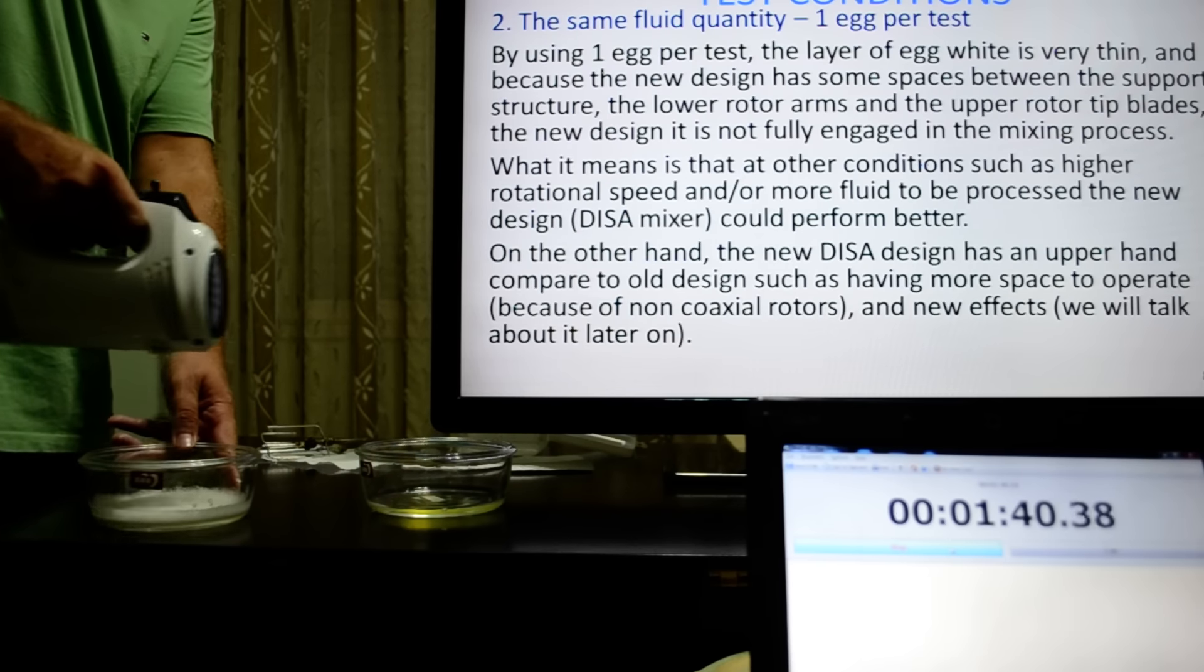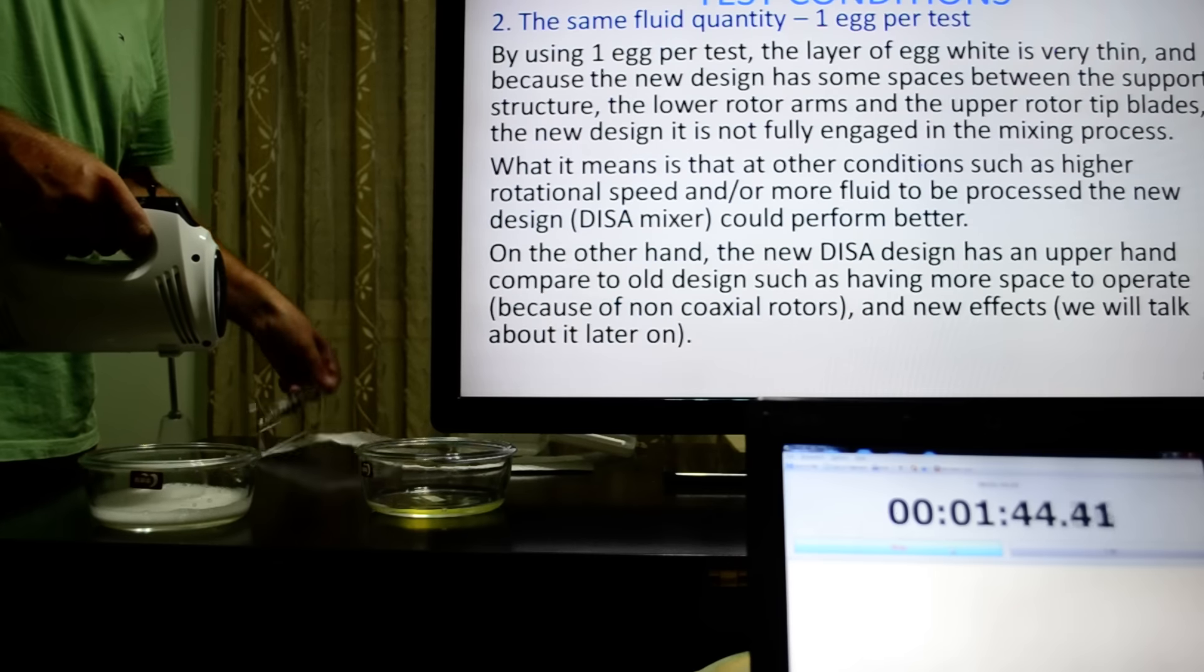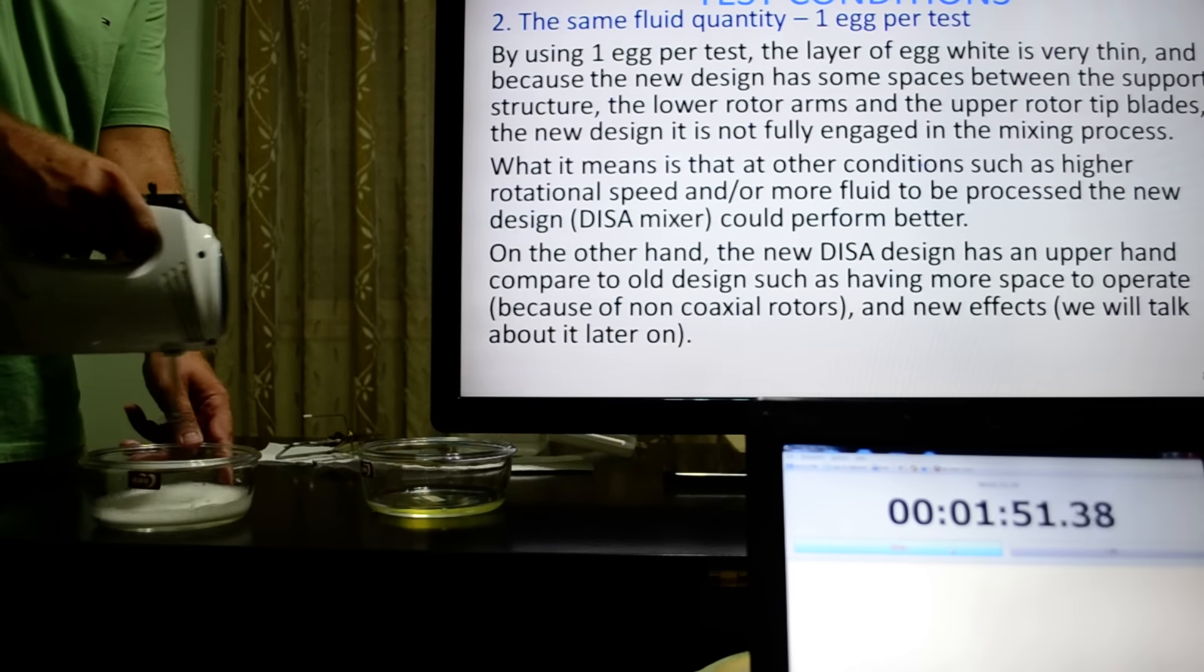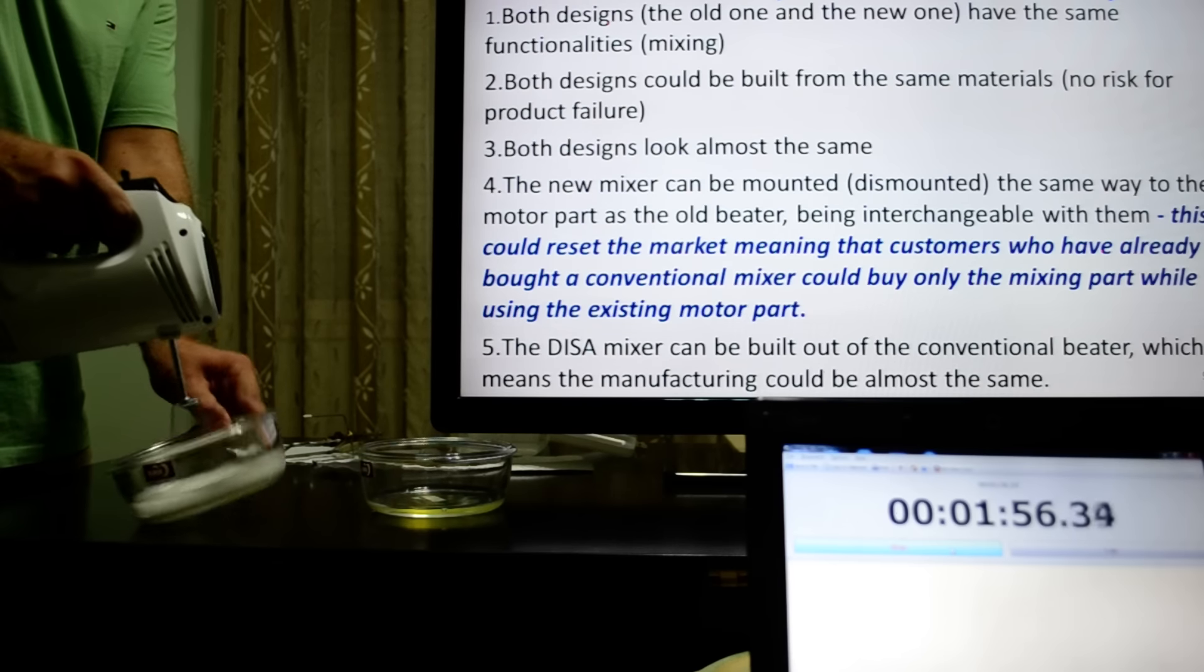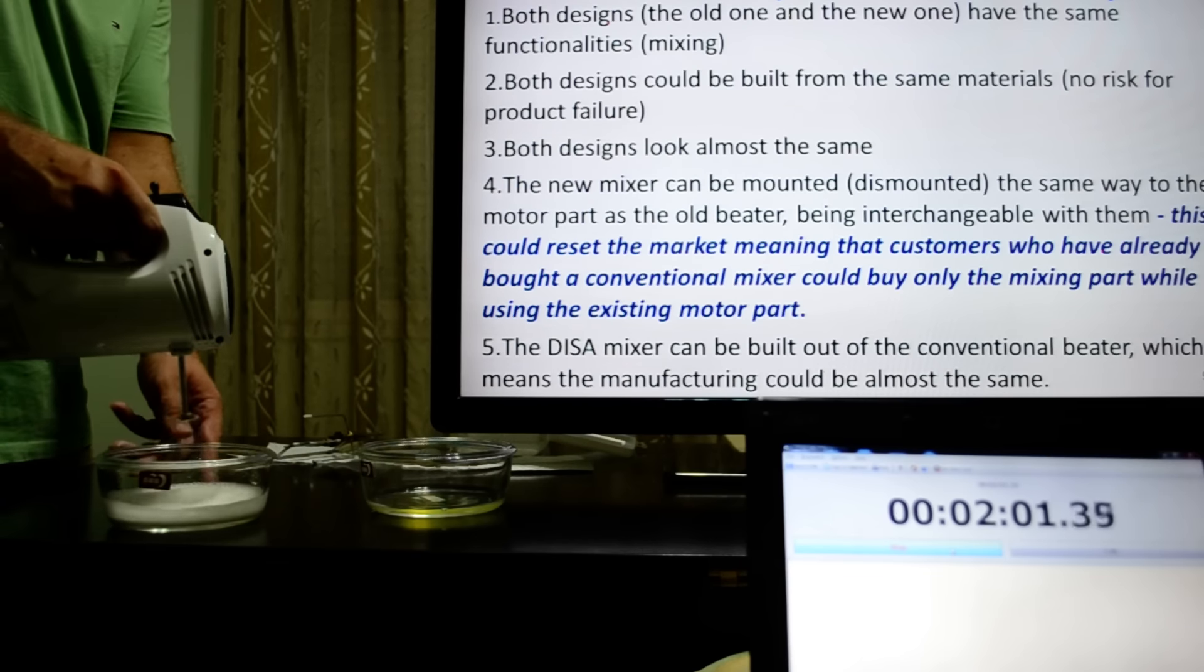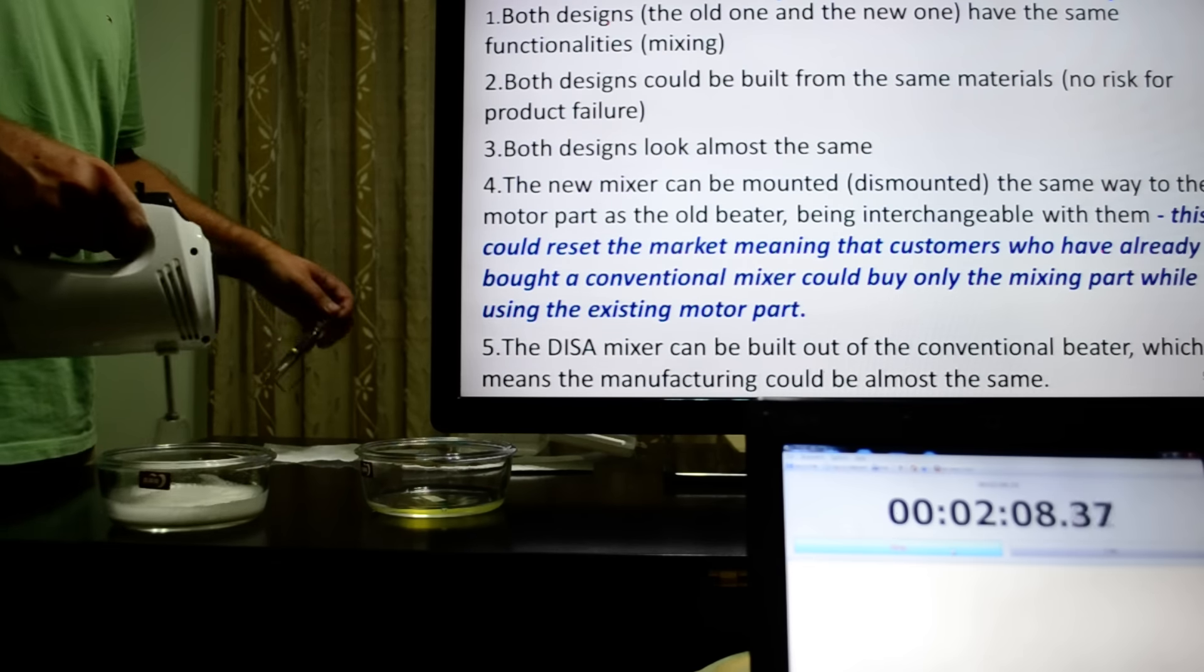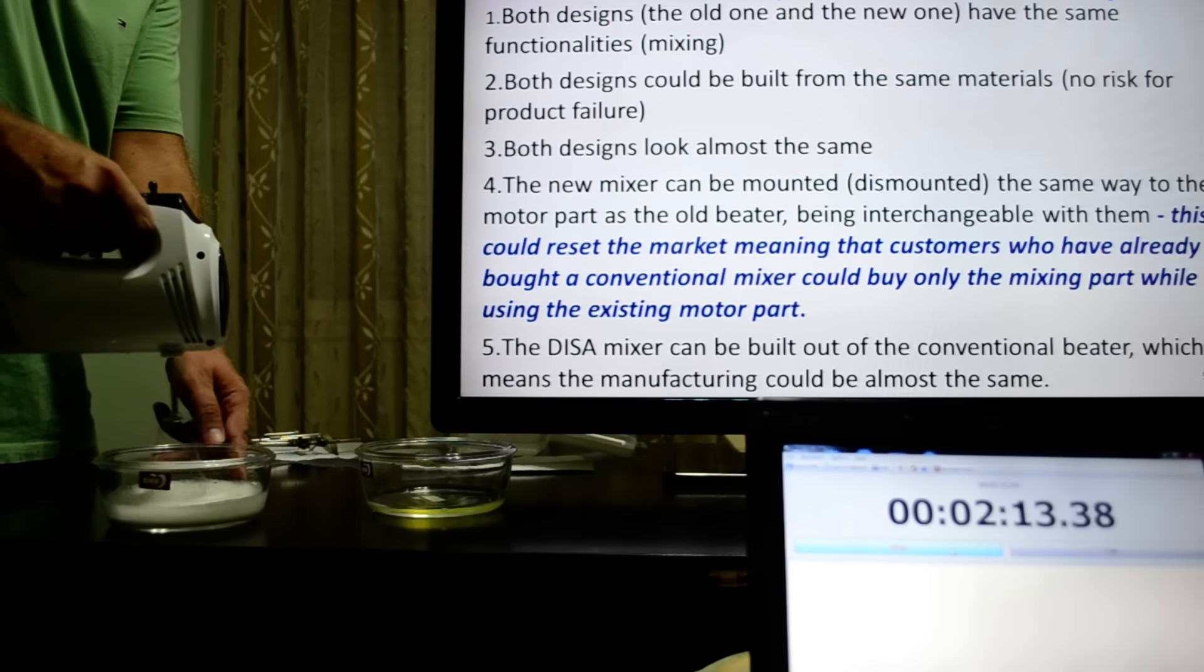On the other hand, the new design has an upper hand compared to the old design, such as having more space to operate because of non-coaxial rotors and new effects. We'll talk about it later. Similarities: both designs, the old one and the new one, have the same functionalities which is mixing. Both designs could be built from the same materials. Both designs look almost the same. The new mixer can be mounted the same way as the old one, being interchangeable with the existing mixers, and a different mixer can be built out of the conventional beater.